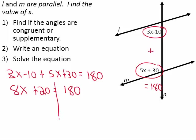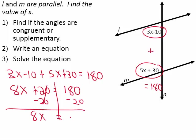To finish solving the equation, we need to subtract 20 from both sides, because that's a plus 20. We subtract 20, and we get 8x is equal to 160 degrees. We need to get x by itself — it's 8 times x — so we divide both sides by 8, giving us x is equal to 20 degrees.